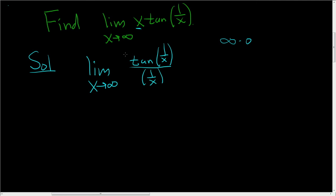If you take the tangent of 1 over x and you divide by 1 over x, you really multiply by the reciprocal, which is x. And so these are exactly the same.